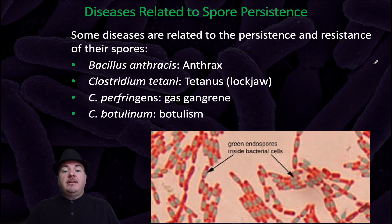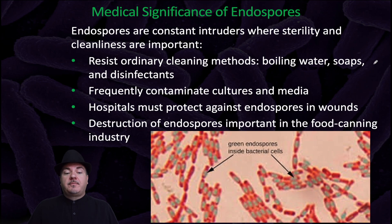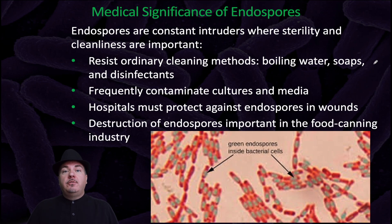There are some human diseases related to spore persistence, for example anthrax, tetanus or lockjaw, gangrene, and botulism. Endospores are consistent intruders where sterility and cleanliness are important. They're resistant to ordinary cleaning methods, so boiling water, soaps, and disinfectants might not get rid of endospores. They frequently contaminate cultures and media, hospitals must protect against endospores in wounds, and destruction of endospores is important in the food canning industry.